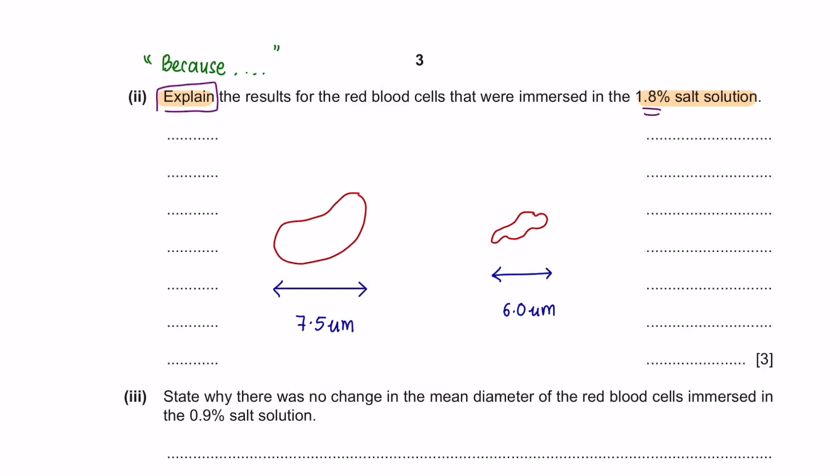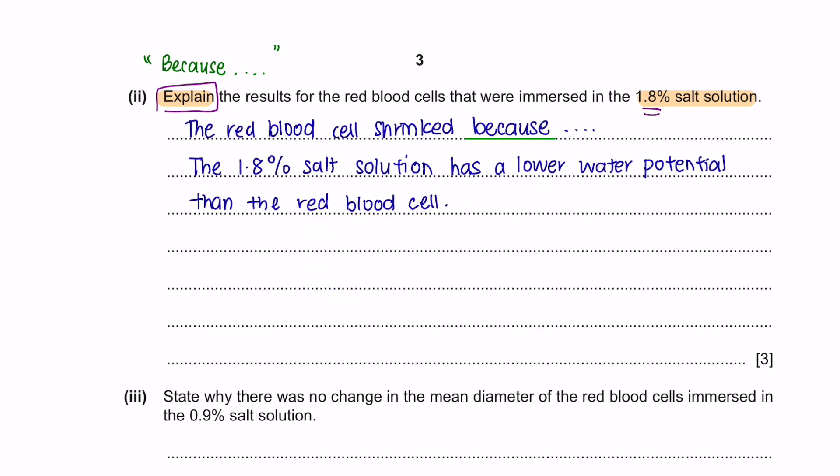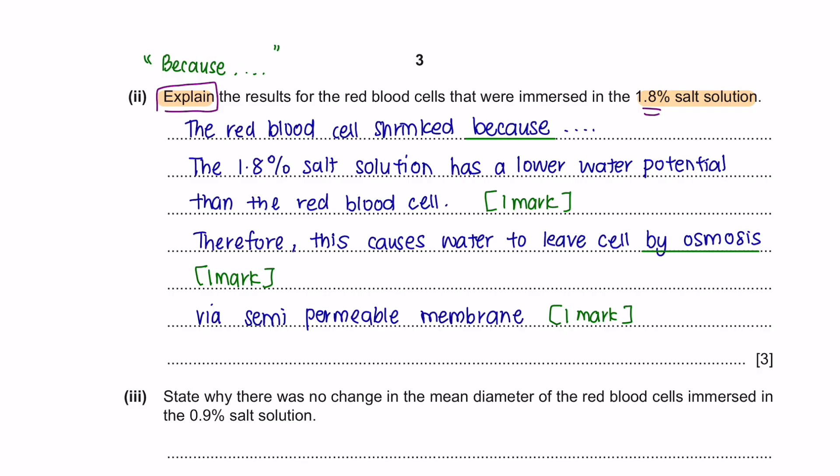This question is from the part of osmosis. The red blood cell has shriveled because the net movement of water was out of the cell. This must be because the red blood cell have higher water potential than the solution causing the water to move out from the cell into the solution. So the red blood cell shrinks because the 1.8% salt solution has a lower water potential than the red blood cell, giving you your first mark. Therefore, this causes the water to leave the red blood cell by osmosis. And to obtain the last mark, you can use the definition of osmosis to answer your question. Water leaves by osmosis via the semi-permeable membrane down a water potential gradient. Whenever given question about osmosis or active transport, you can always use its definition to explain your question and write as much as possible because you will not know where the marks are coming from.